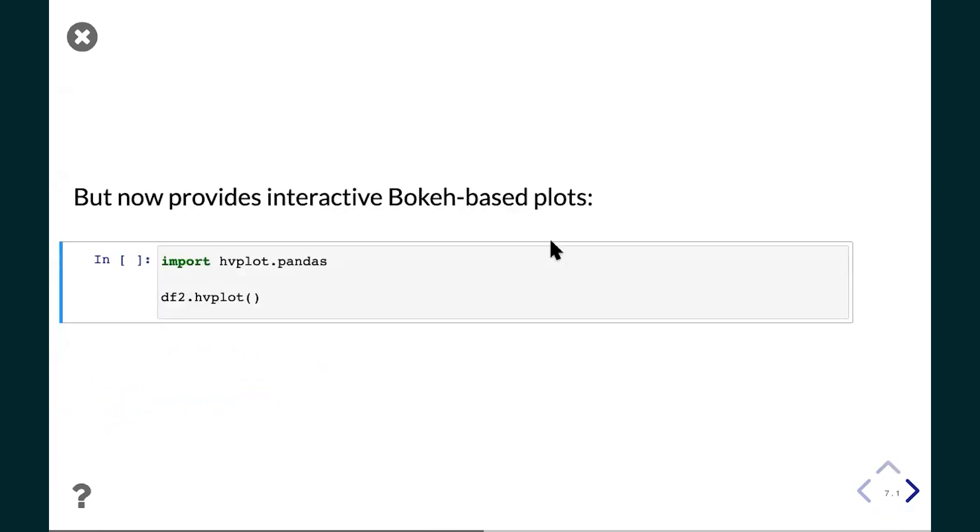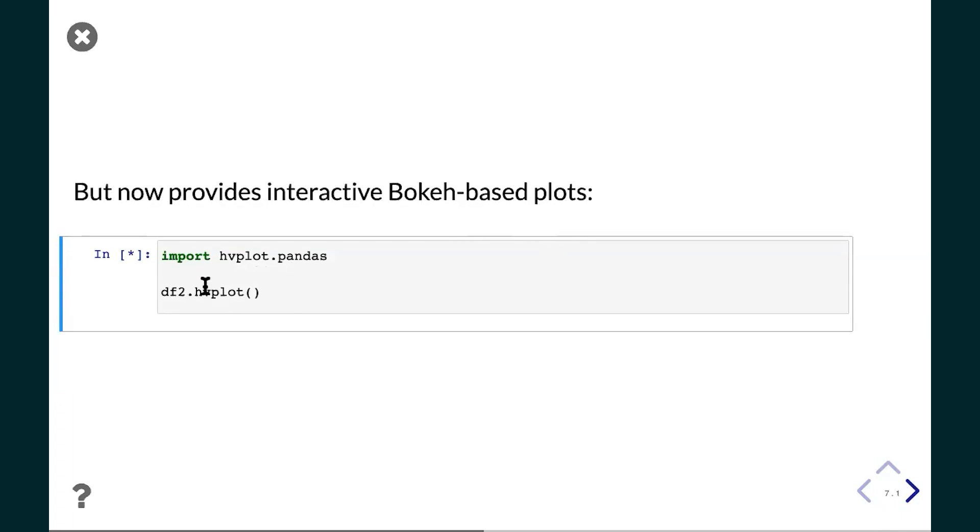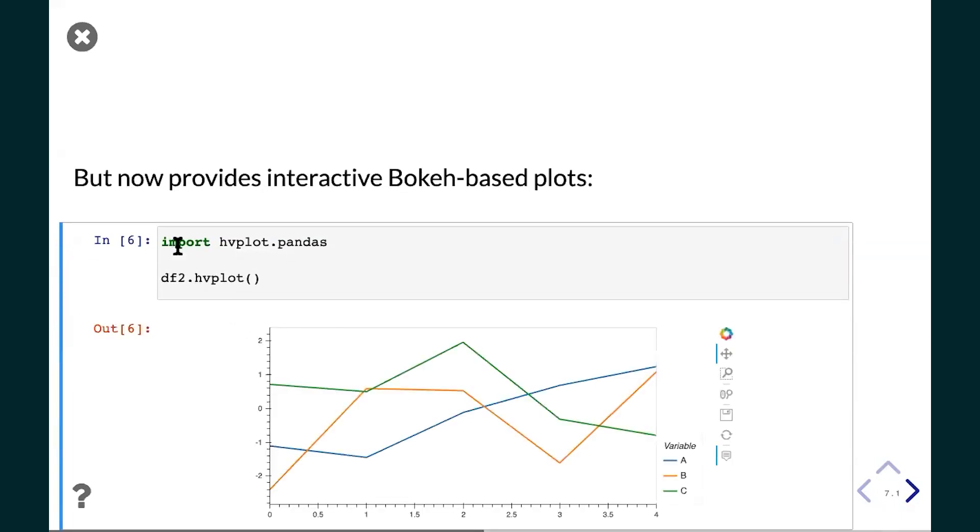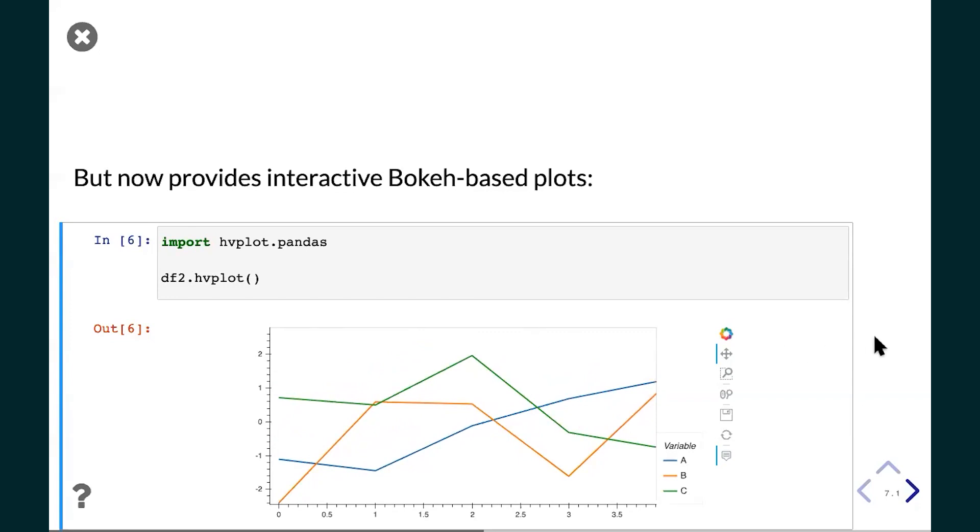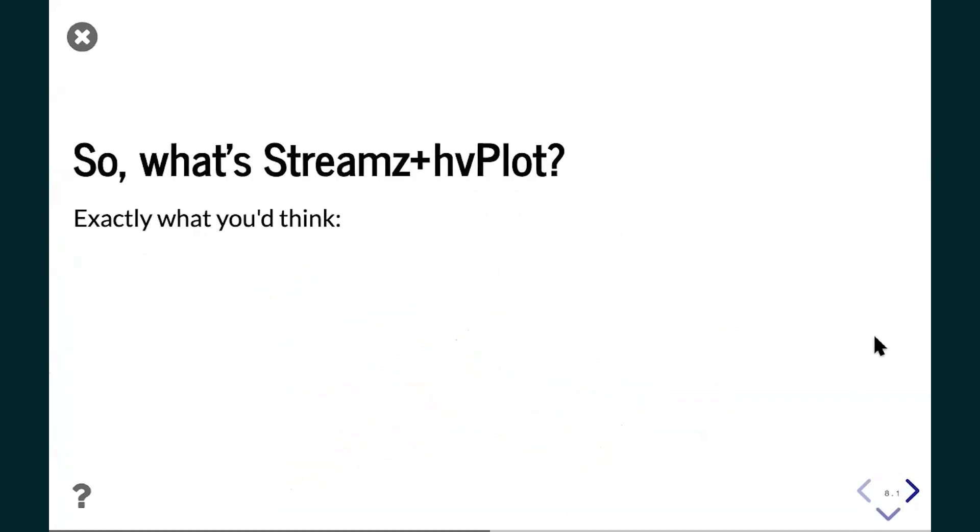But if you do that with hvPlot, we actually by default don't call it .plot, we call it .hvplot, just so that you can tell which one we're using in any example here. It's possible to install it as .plot as well. This is now a similar plot like the one you just saw, but it's now interactive. You can hover, you can drag it around, you can zoom and such. We won't really use any of those features in this talk, but the fact that it's interactive means the data can be interactive too, and we will use that a lot.